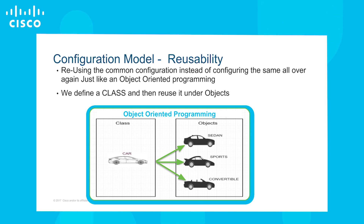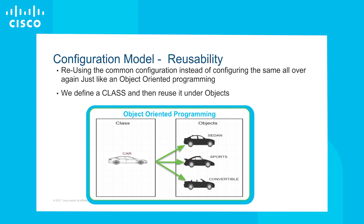One of the cornerstones of the configuration model is reusability. Just like object-oriented programming, we reuse the code instead of repeating it over and over again. We can relate the configuration model to different classes in object-oriented programming.